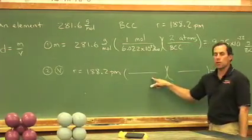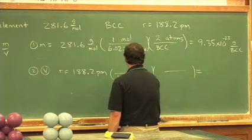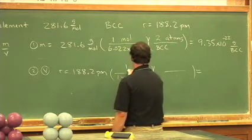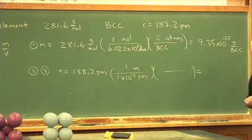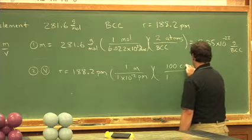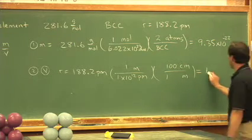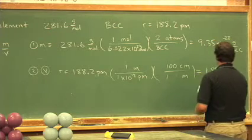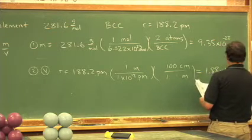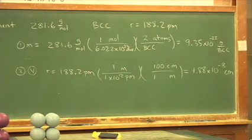picometers into meters and then into centimeters. There are 1 times 10 to the 12th picometers in 1 meter. Picometer is an extremely small unit. And then 100 centimeters in 1 meter. And I calculate this to be 1.88 times 10 to the negative eighth centimeters. Now that's still the radius of one of the atoms.